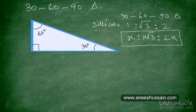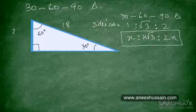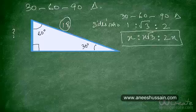Now let's say the hypotenuse has a length of 18. What should be the length of the side opposite 30°? Since the hypotenuse is always twice the side opposite 30°, we divide the hypotenuse by 2: 18 divided by 2 gives 9. So the side opposite 30° is 9, and the side opposite 60° — which is the base — is 9√3.